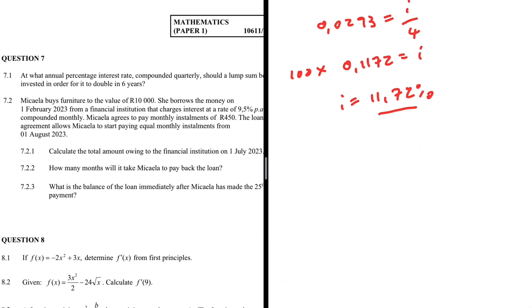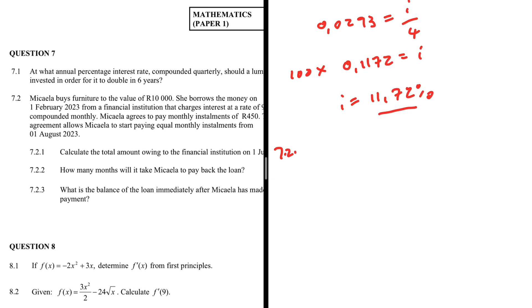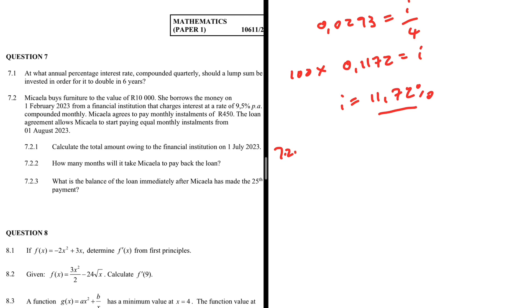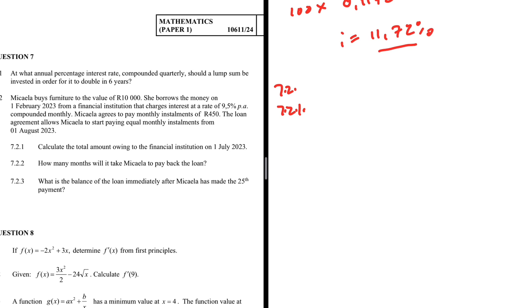In 7.2, Michael buys furniture to the value of R10,000. She borrows the money on 1 February 2023 from a financial institution that charges 9.5% per annum compounded monthly. Michael agrees to pay monthly installments of R450. The loan agreement allows her to start paying from 1 August 2023. Question 7.2.1: calculate the total amount owing on 1 July 2023.